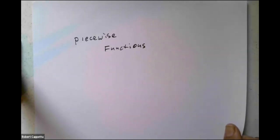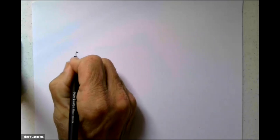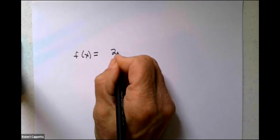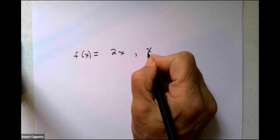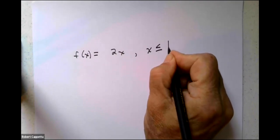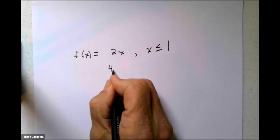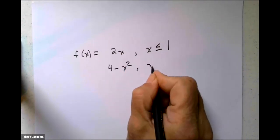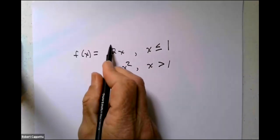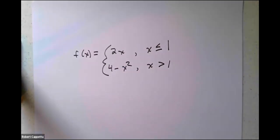This is Bob Capeta and this lesson is on piecewise functions. Let's take a look at the kind of function we're talking about. Let's say I have f(x) equals 2x when x is less than or equal to 1, and it is 4 minus x squared if x is greater than 1. Now this looks like two functions but in fact it's one, and we can see how it behaves by placing some values.